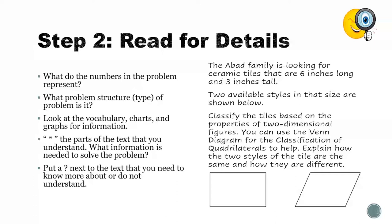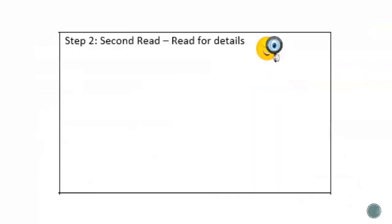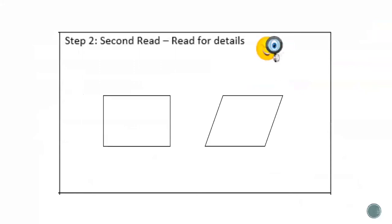Now that I've read a second time, I know that the tiles are six inches long and three inches tall — that is something that may be helpful for classifying our quadrilaterals. I also now know that I need to find out how the quadrilaterals are the same and how they are different. From the second read, I know the tiles are six inches long — I'm going to use IN as my abbreviation for inches.